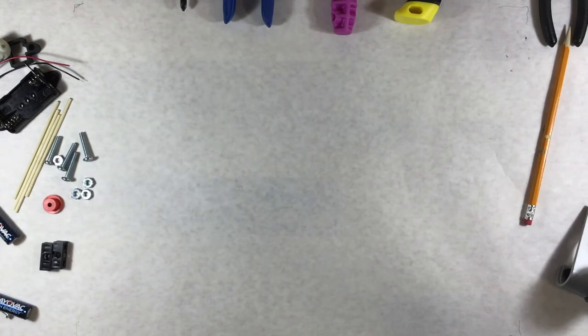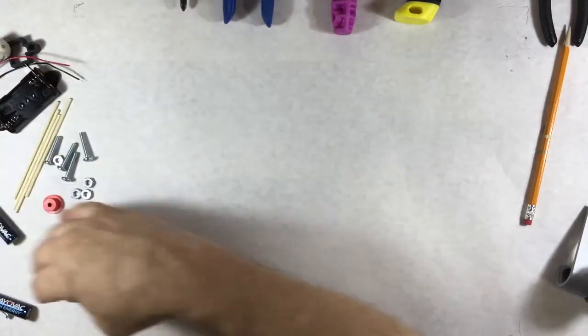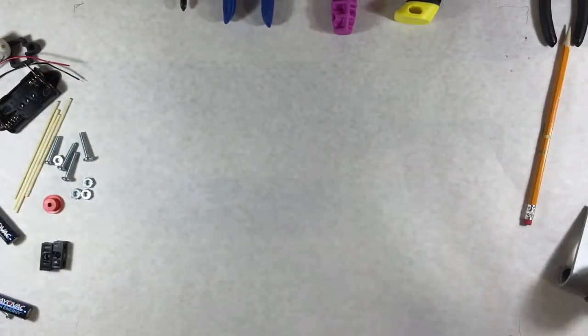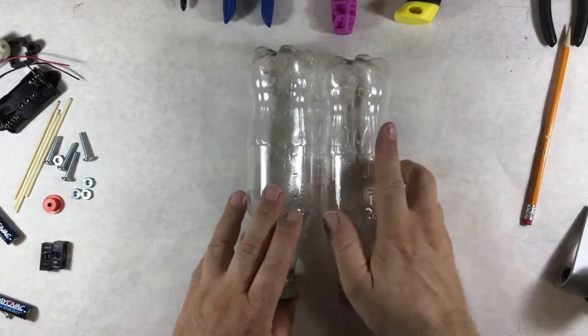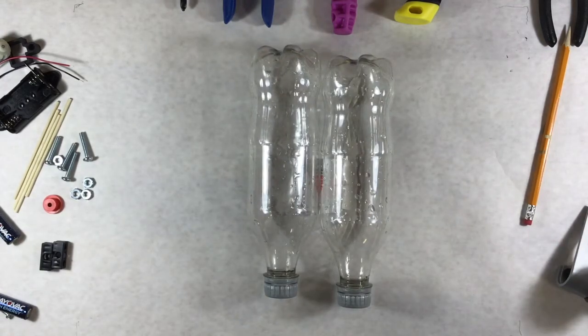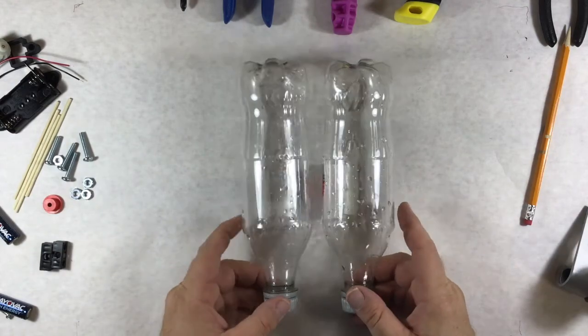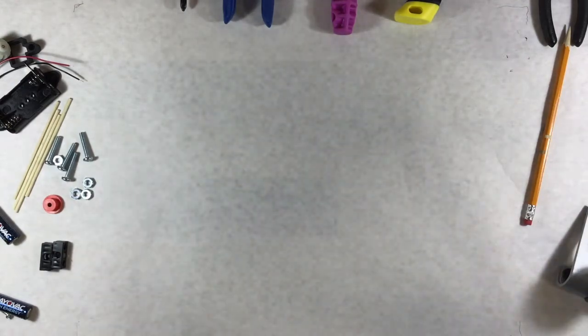Other things you're going to need: now this is where the recycle bin comes in handy, or trip to the dollar store. You're going to need things that float, because these materials that we had over there, they just build like a skeleton to mount the propeller. Then you're going to need some floating stuff to actually make the boat. So I grabbed a couple of small pop bottles out of the bin. Water bottles or juice bottles, something that's going to float, an empty juice box.